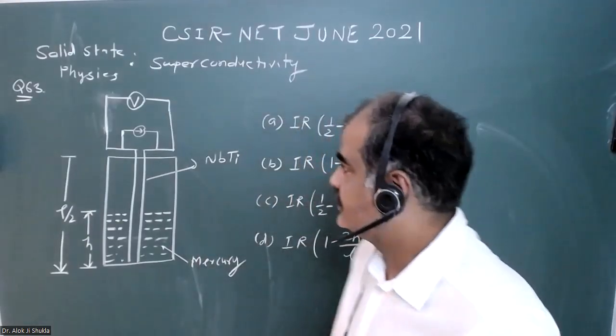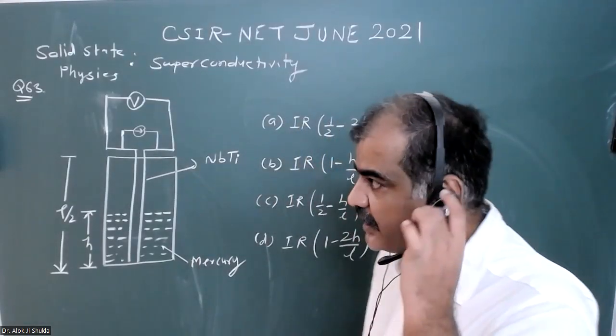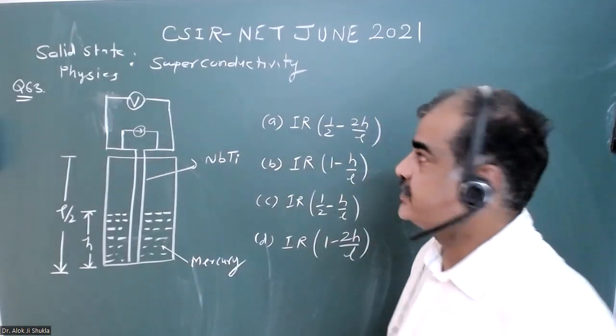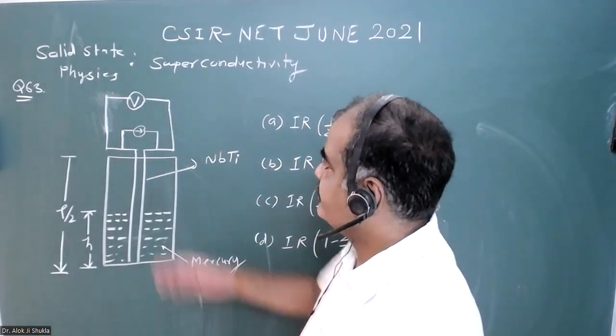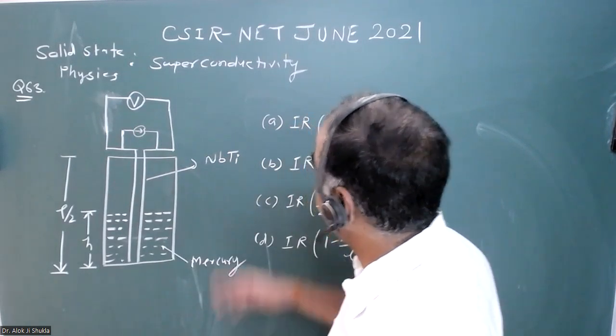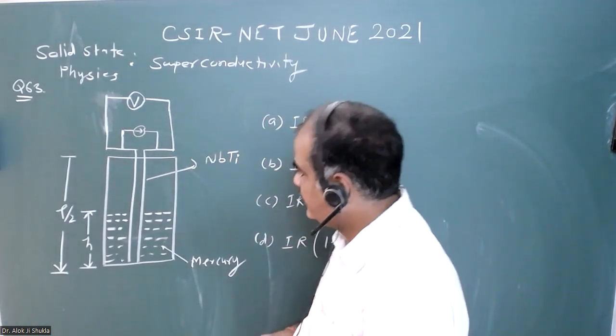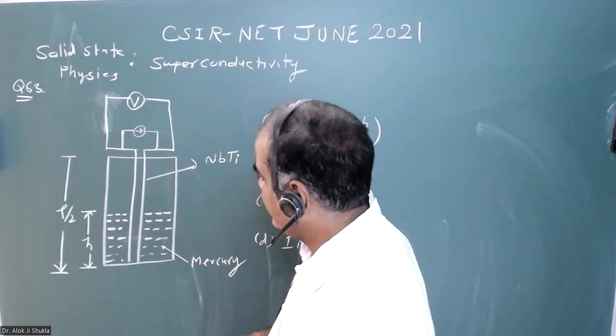Good afternoon students. I am solving the CSIR NET June 2021 question. This question is asked from solid state physics and the topic is superconductivity. In this question they have given a wire